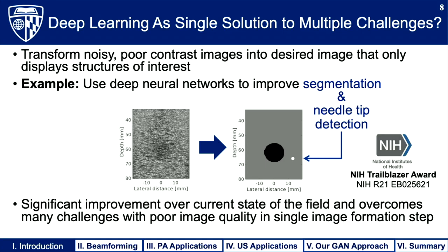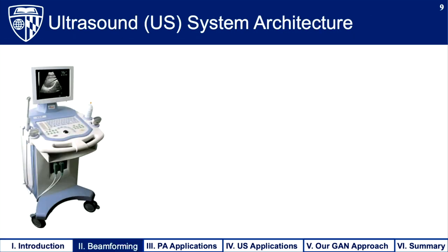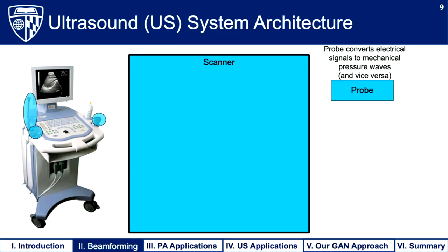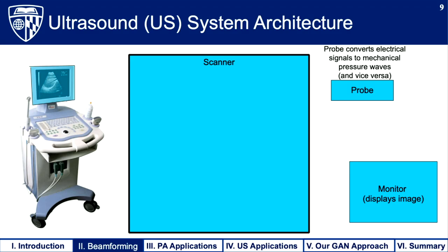Assuming you know a lot about deep learning, for the next part of the talk I'll go into more detail about the beamforming process. This is a standard ultrasound system used in the clinic. Its architecture contains three main components: the first is a scanner which houses much of the electrical components and the computing hardware; then we have a probe used to interface with the body in a range of different shapes and sizes depending on the body part being imaged; and then we have a monitor used to display the image on the screen.